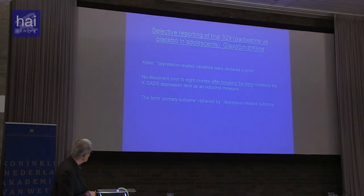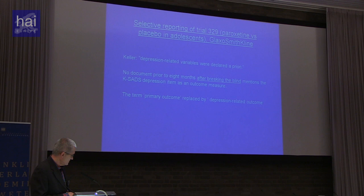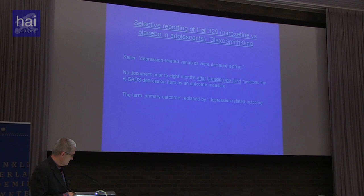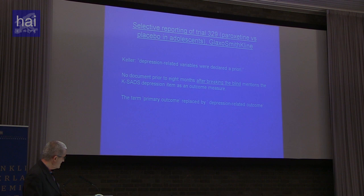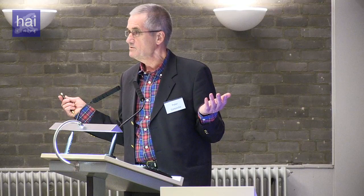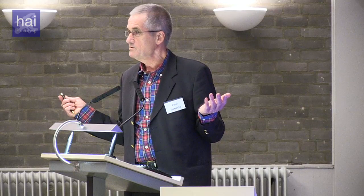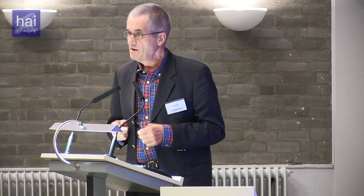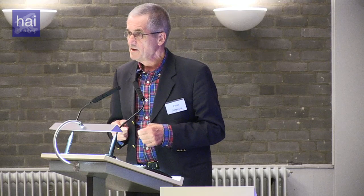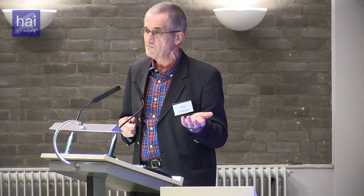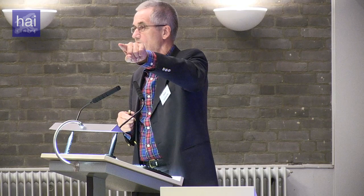The first author said that depression-related variables were declared a priori — this wasn't true. No document prior to eight months after they had broken the code mentions one of these outcome measures that suddenly appeared in the manuscript but didn't appear in the protocol. They replaced the term 'primary outcome' with something they called 'depression related outcome,' which is what some people call the Texas sharpshooter technique: you fire a pistol at the wall, don't hit the target, then remove the target and make a new one with the bullet hole in the center.